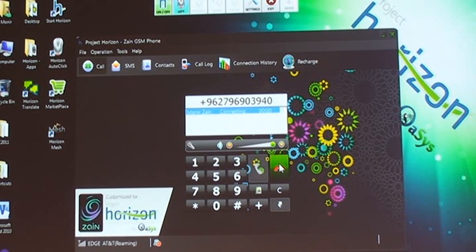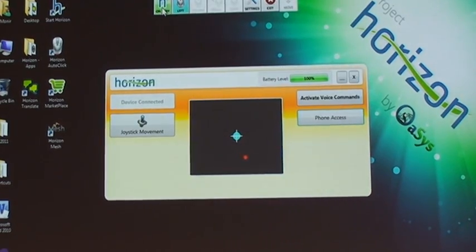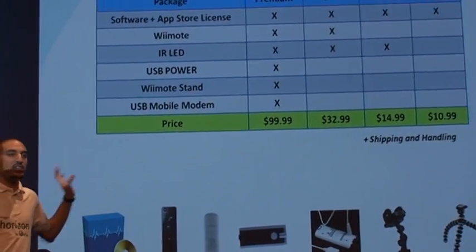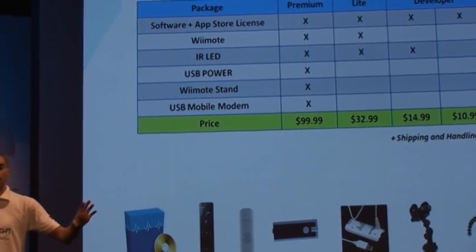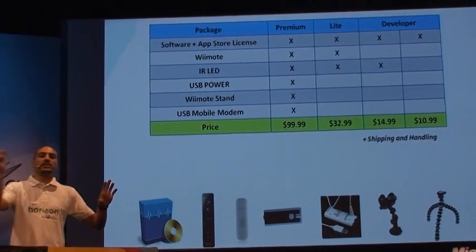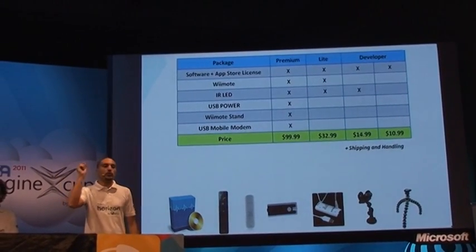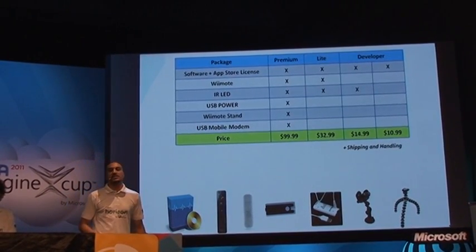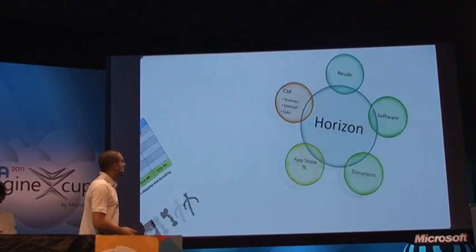The Light package is the basic option — basic control and functionalities to control the PC: the Wii remote, the IR LED, and the software. Then there's the Developer package — this is where partnerships can happen. We're contacting different agencies around the world, giving them the software and telling them how to build the hardware to get this on every market. It's as easy as getting a Wii.